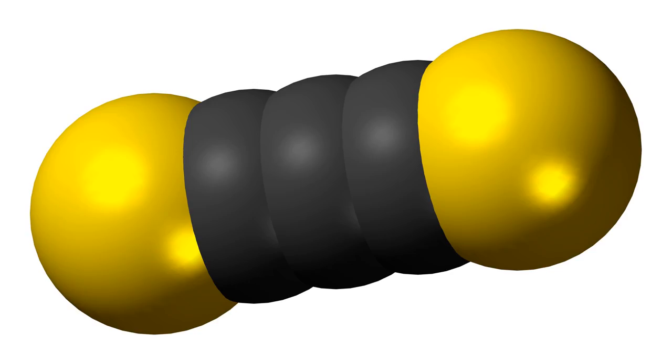Carbon subsulfide is an inorganic chemical compound with the formula C3S2. This deep red liquid is immiscible with water but soluble in organic solvents. It readily polymerizes at room temperature to form a hard black solid.